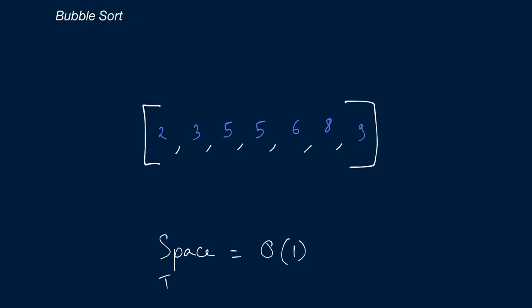The time complexity is going to be O(n²), where n is the length of our input array. It's O(n²) because we are looping through the array multiple times until it gets sorted, and in the worst case or even the average case, we're doing a bunch of for loops through this array. It is important to know that the best case scenario for bubble sort is actually O(n), not O(n²).